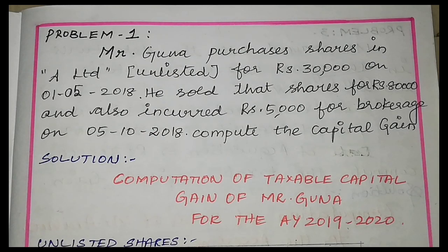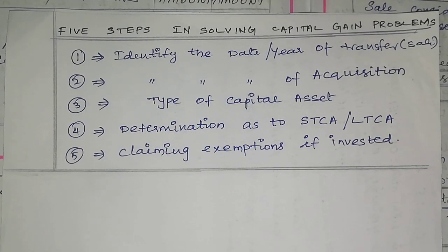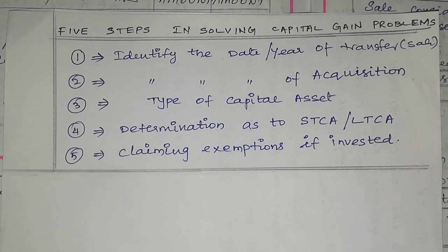In this video, we will be applying the theoretical information into practical problems. Here are the 5 steps in solving capital gain problems. Whenever you look at the question, you will find the year of purchase and the year of sale, and then the type of asset. Once we have seen that, we can know whether it is a long-term or short-term capital asset. You will find the investment and identify the relevant section, and then we can easily solve the problem.